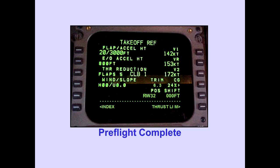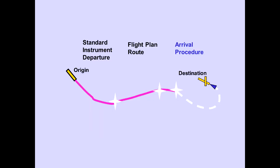When all items in the pre-flight are complete, pre-flight will be replaced by dashes and the thrust limit prompt is displayed. The pre-flight sequence is completed. Now, let's look at adding your arrival procedure at the end of the route.